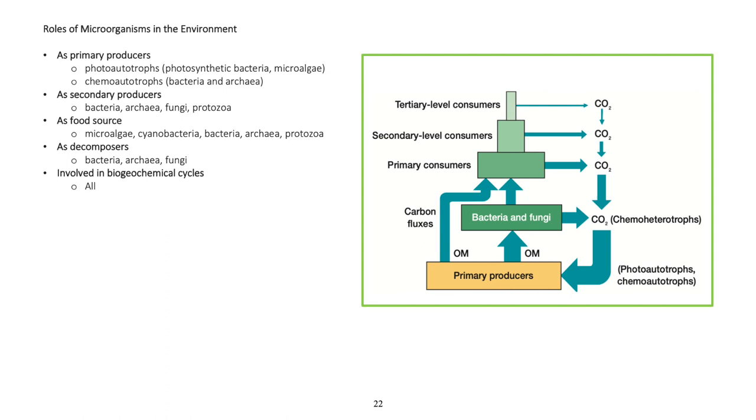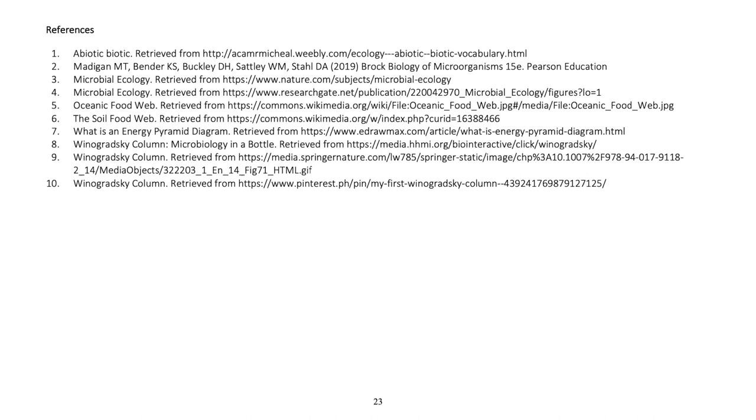Roles of microorganisms in the environment: As primary producers - photoautotrophs including photosynthetic bacteria and microalgae, chemoautotrophs including bacteria and archaea. As secondary producers - bacteria, archaea, fungi, protozoa. As food source - microalgae, cyanobacteria, bacteria, archaea, protozoa. As decomposers - bacteria, archaea, fungi. Involved in biogeochemical cycles.